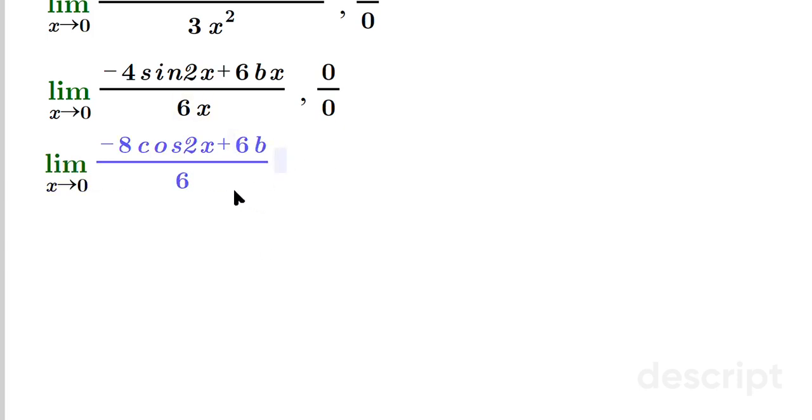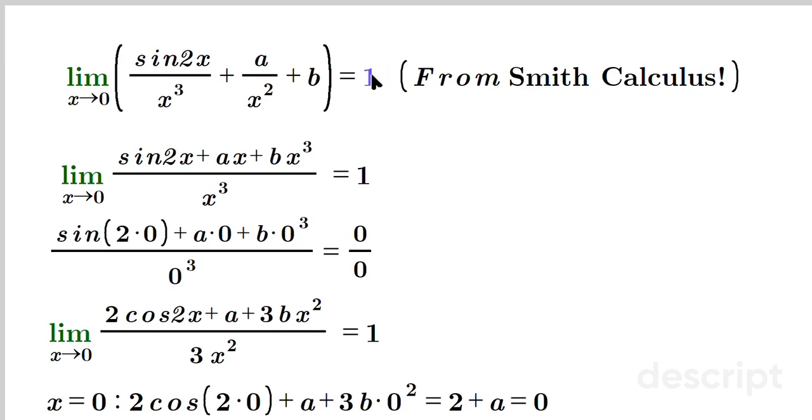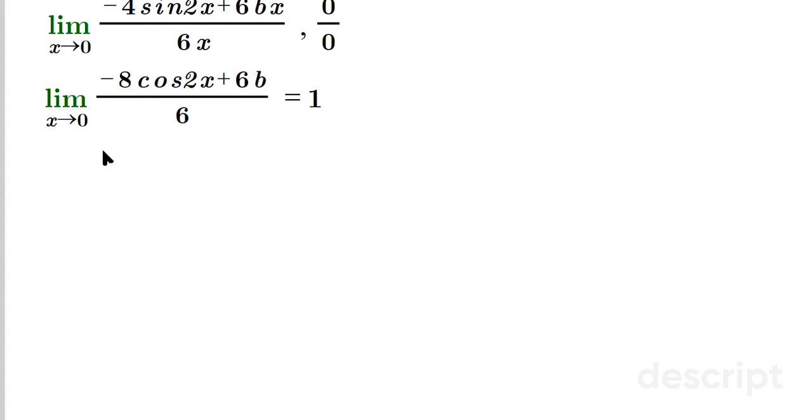What happens in this case? If you plug in directly we don't have to worry about division by 0 anymore. Remember at the very end we wanted to have a value of 1 as the value of the left side, so this has to be equal to 1. Now we can do direct substitution: negative 8 cosine of 2 times 0 plus 6b. This will give us an equation in b over 6 equals 1.